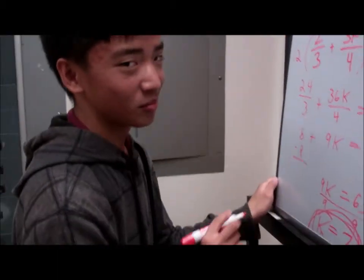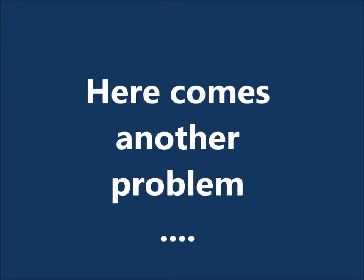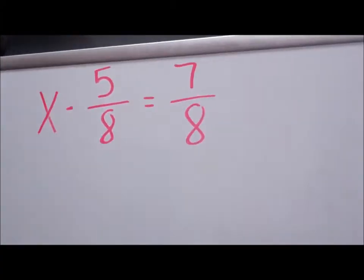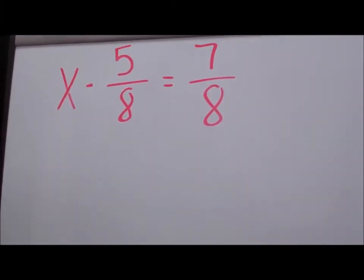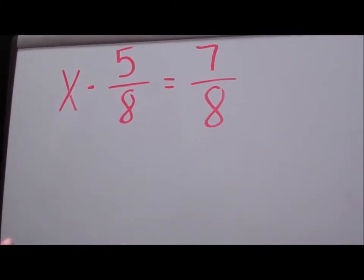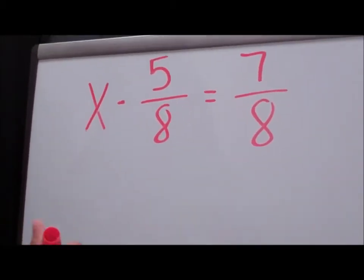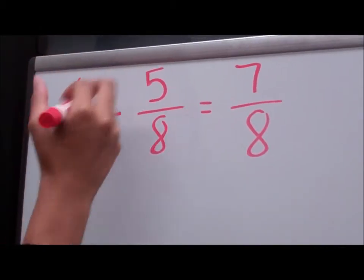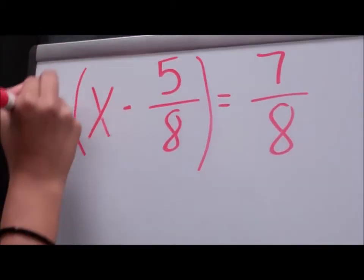Good job, Dennis! Once again, I applaud you. Now that we understand how to do these kinds of problems, let's do another one. Okay, the first thing we have to do is find the LCD. Looking at this equation, the LCD is 8. So we multiply 8 to both sides of the equation.